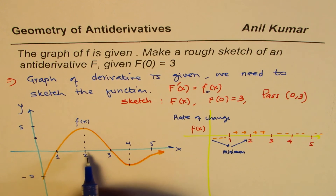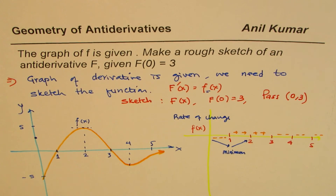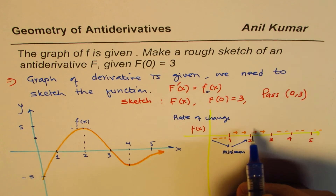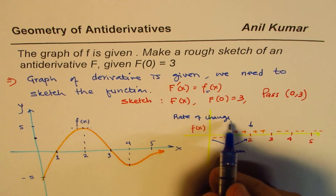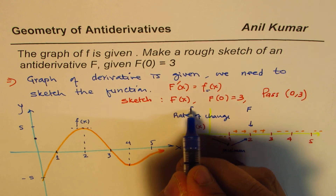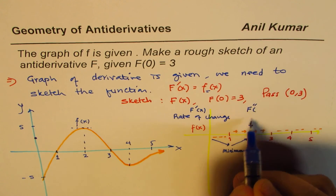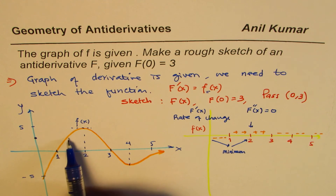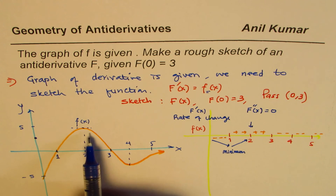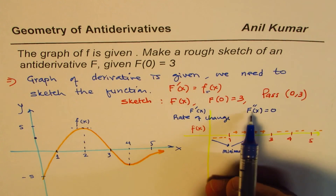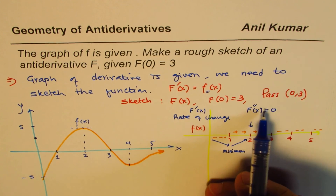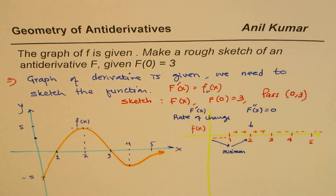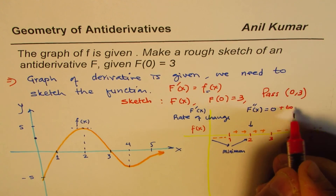At x = 2, if I draw a tangent line to the derivative graph, I get zero. So F''(x) = 0 at x = 2. Also, the graph is concave down around that region, meaning the second derivative of F changes from positive to negative — indicating a point of inflection at x = 2.